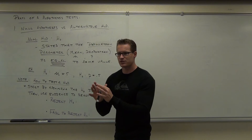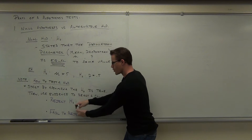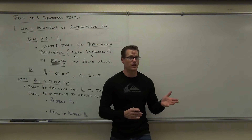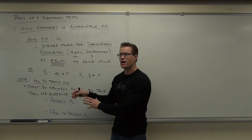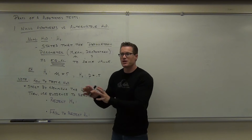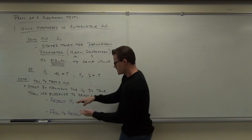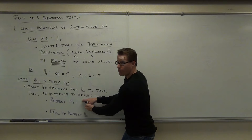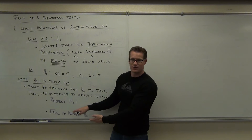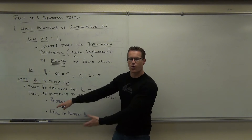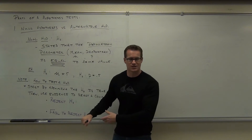All you're going to have enough evidence to do is to prove it wrong or not be able to prove it wrong. It's kind of a pessimistic way of looking at things. You can't ever prove that claim right. But that's the way the courts work too — you can't ever prove anybody innocent. You can only prove them guilty. This is guilty: you have enough evidence to say it's wrong. Or not guilty: you don't have enough evidence to say it's wrong. This is our whole theme for hypothesis testing.